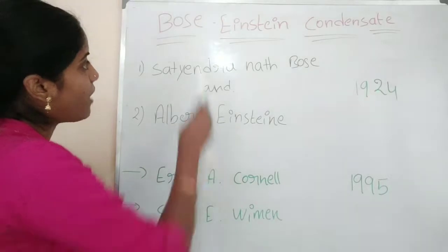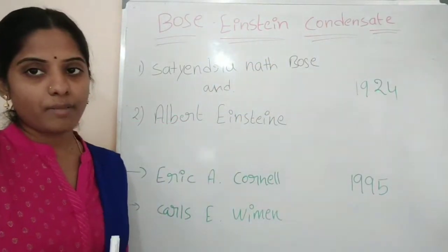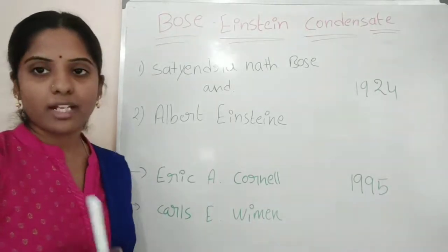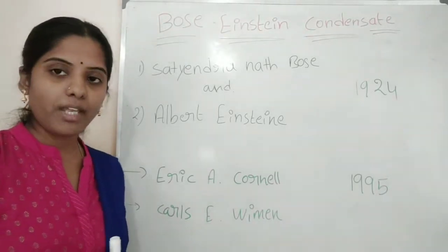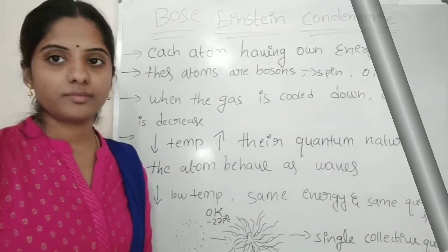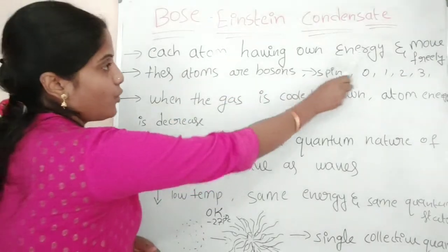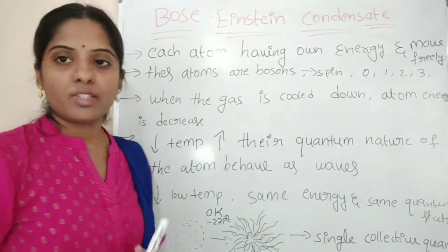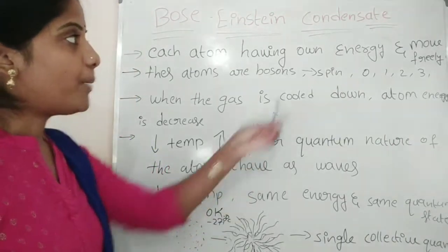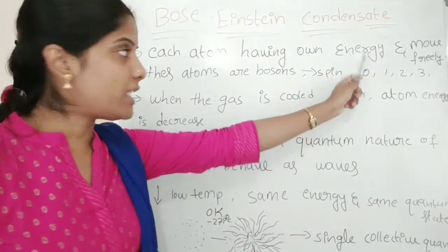Now let's talk about the Bose-Einstein condensate state of matter. When we cool gas particles, they will behave differently. Each atom has its own energy and moves freely. We have to examine what happens to the gas atoms as temperature decreases. Every atom has its own energy.